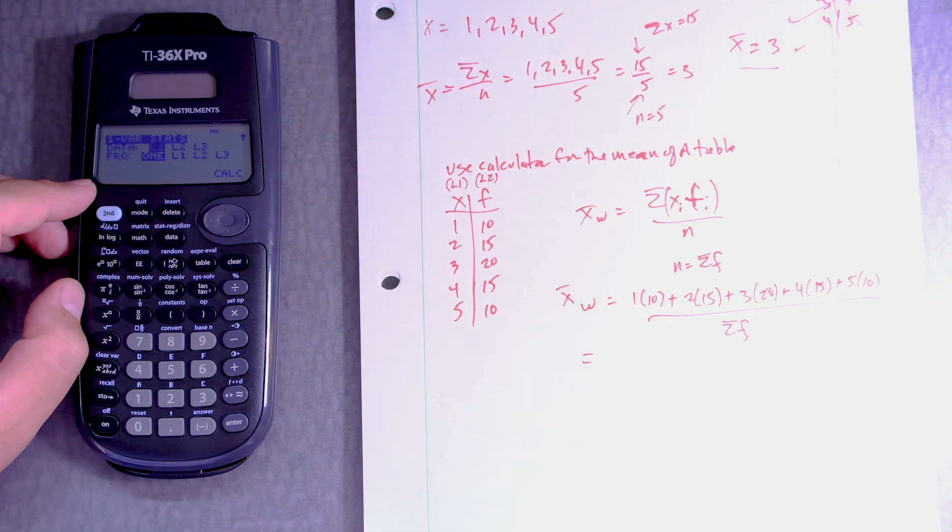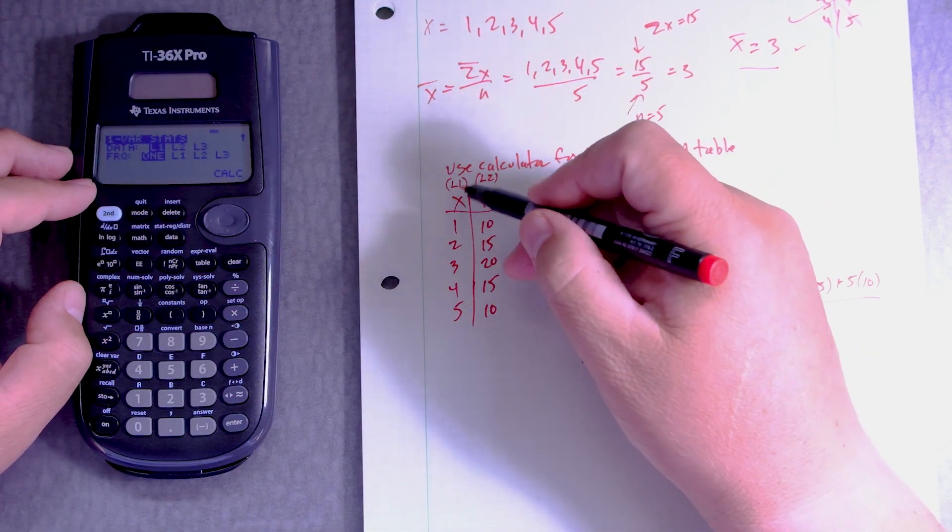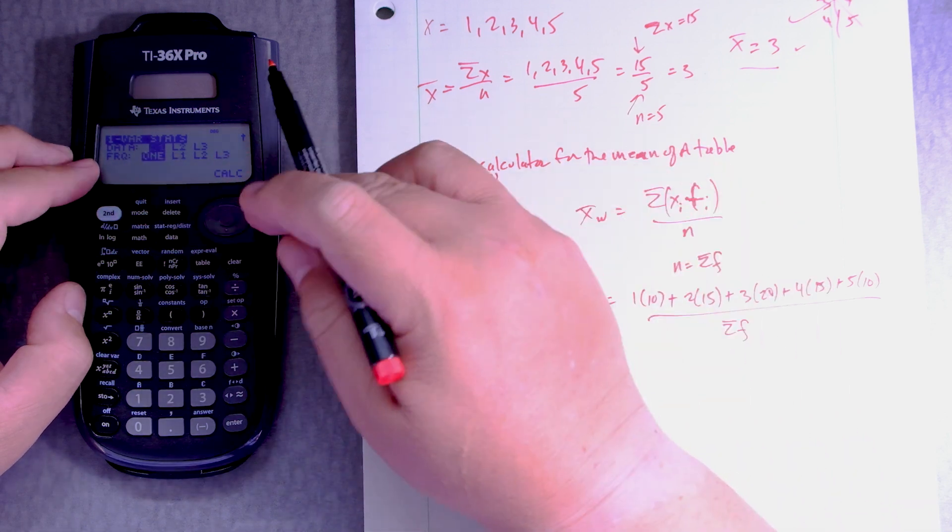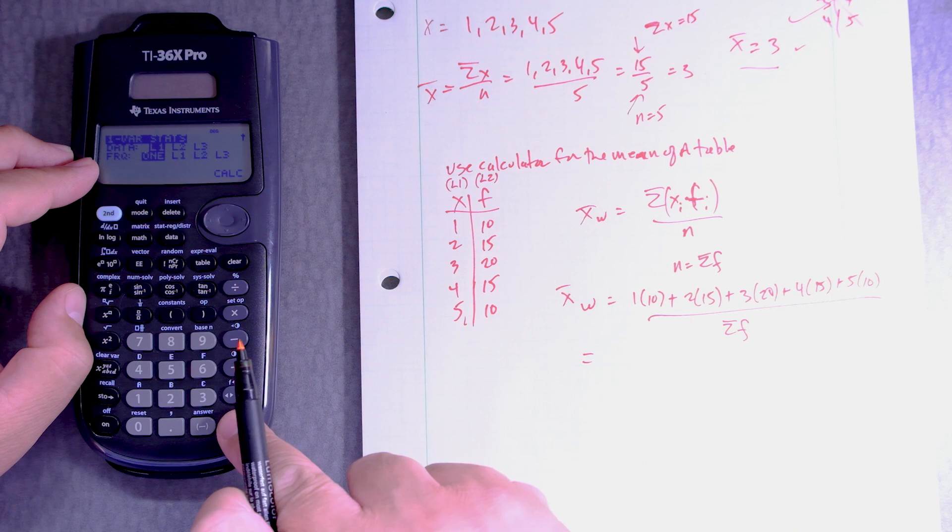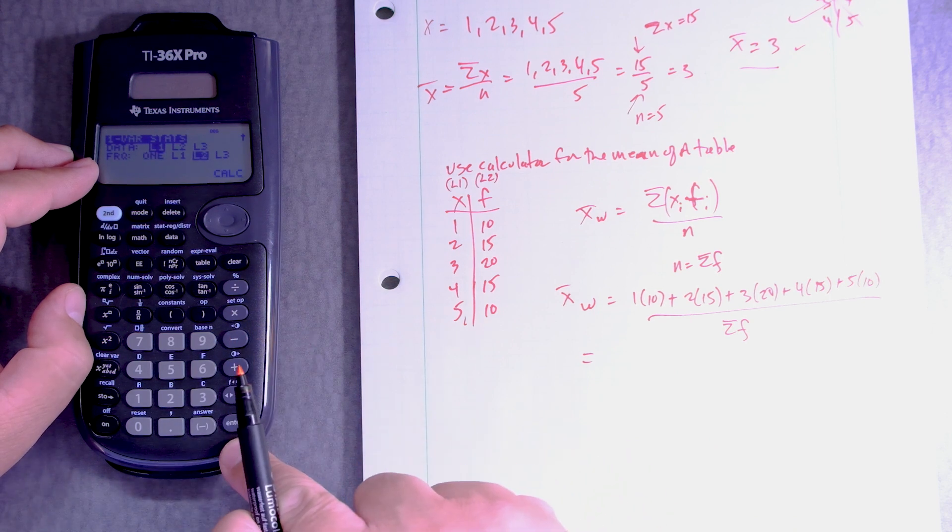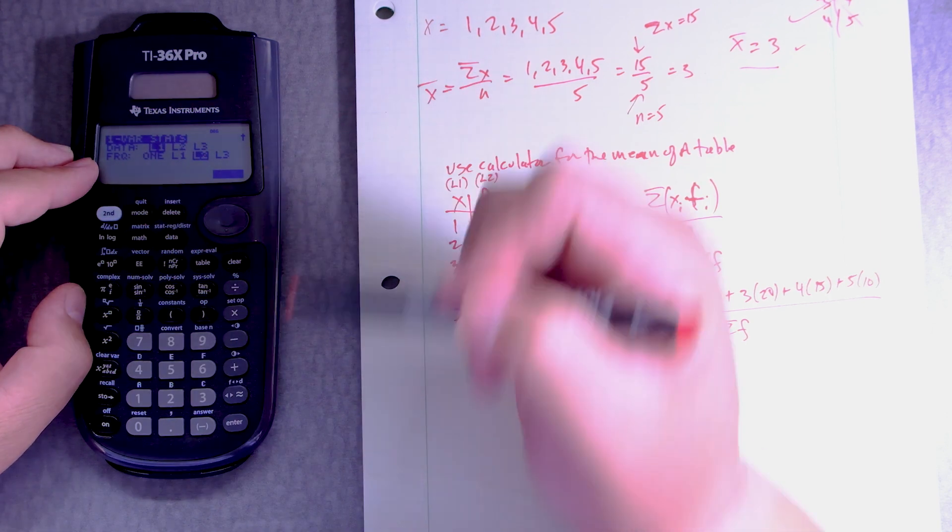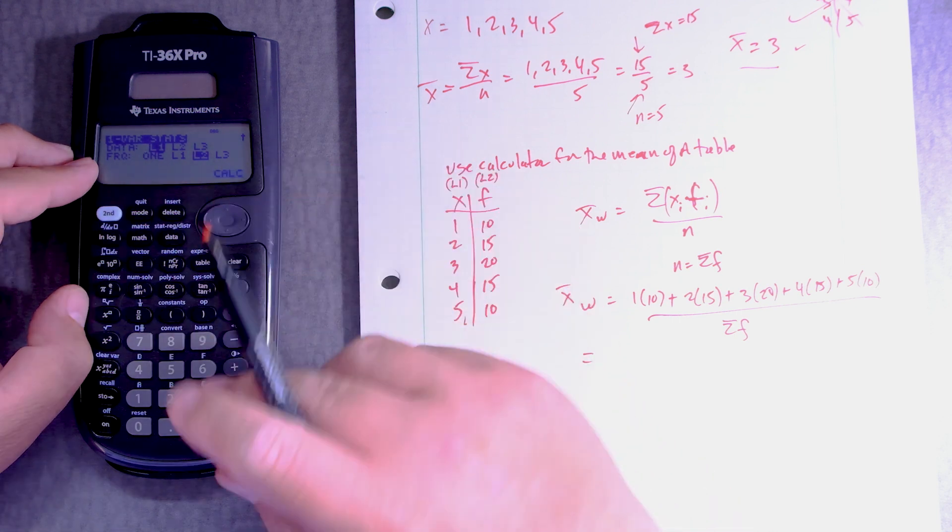And this is a little bit different from the previous video if you watched it. So L1 is here. The frequency is going to be L2 but we got to press and enter that. So now we got L1 and L2 which looks good and then calculate.